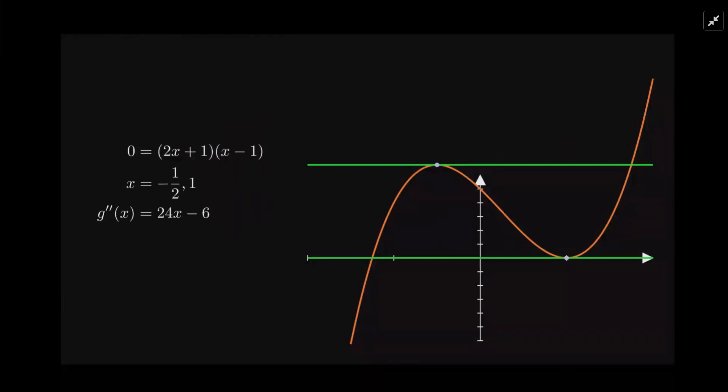And we plug these answers for x into there. So let's put in negative one-half and see what we get. We get negative 18, which is less than zero. Okay, so this section of the graph here is concave down. Concave down means it's going to be a local maximum.